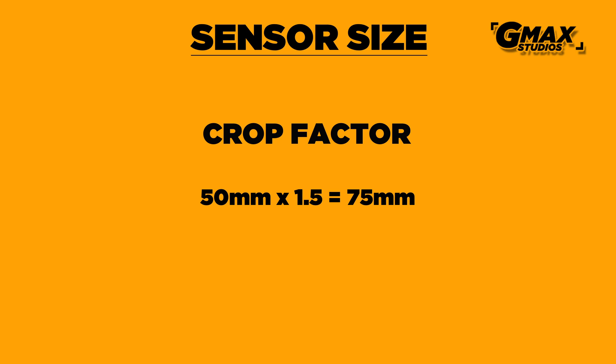Since an APS-C crop sensor is about 1.5 times smaller than the full-frame sensor, the zoom or crop in the focal length is also 1.5 times. So for example, if you use a 50mm lens on a crop sensor like an APS-C, it would become a 75mm lens. Similarly, if you were to use a 100mm lens, it would become a 150mm lens.